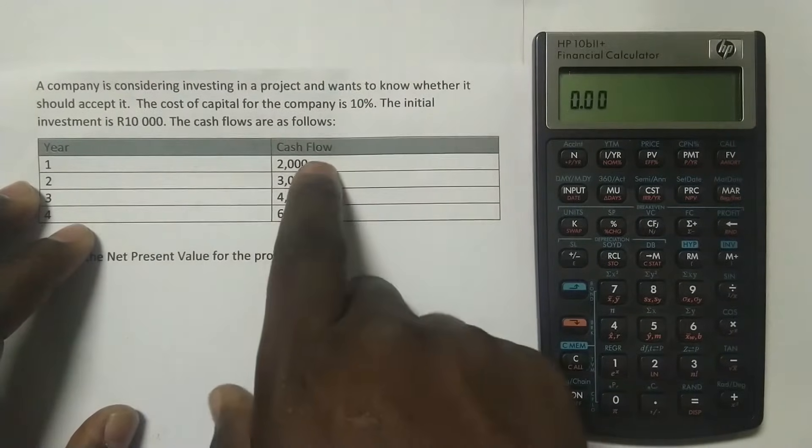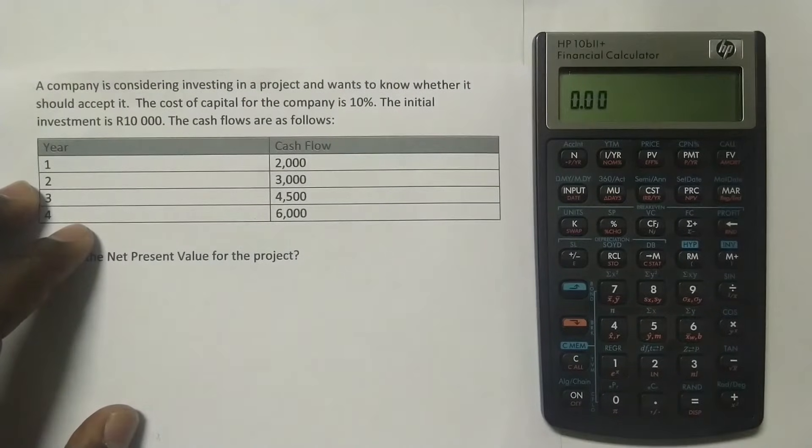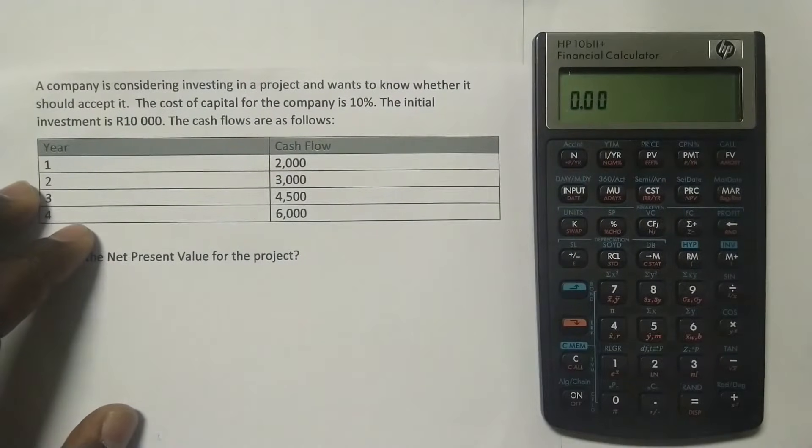What you can see here is that we have one cash flow per year, but by default, this calculator is compounded 12 times per year. So we need to change that to once, because we are receiving the payment only once per year. So you need to change that to one.